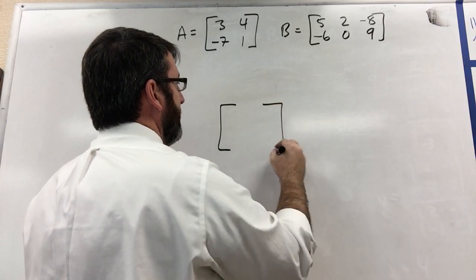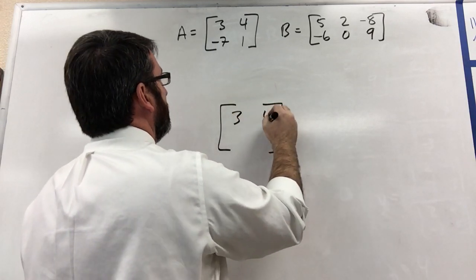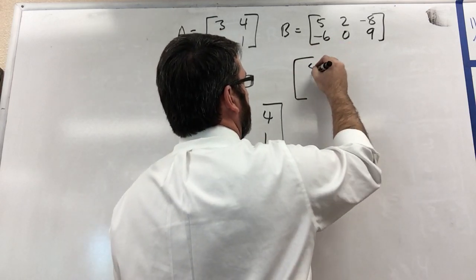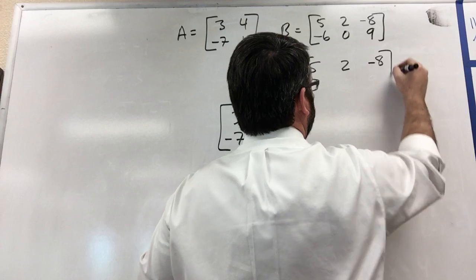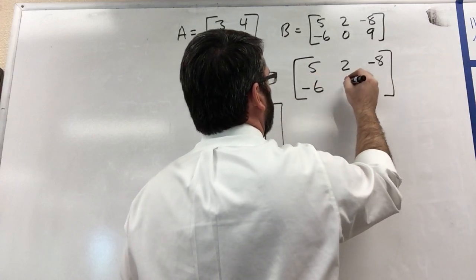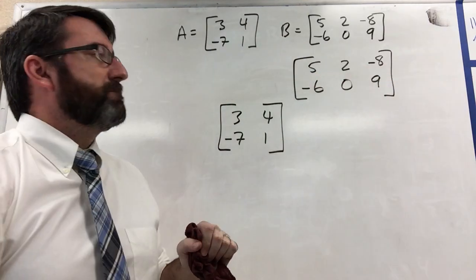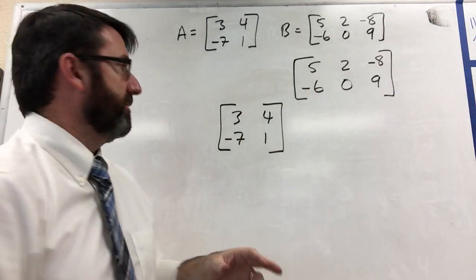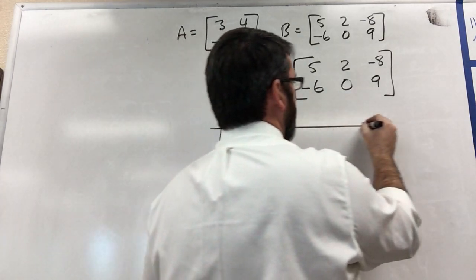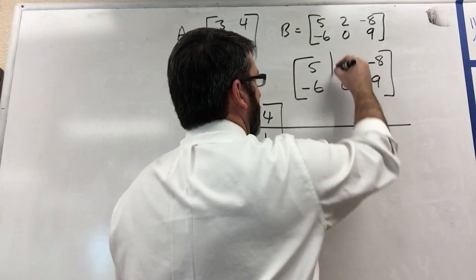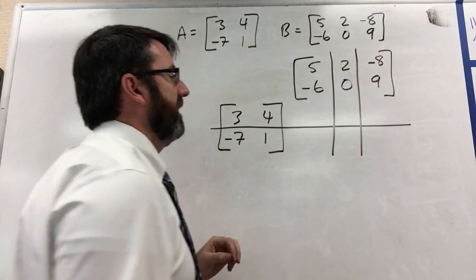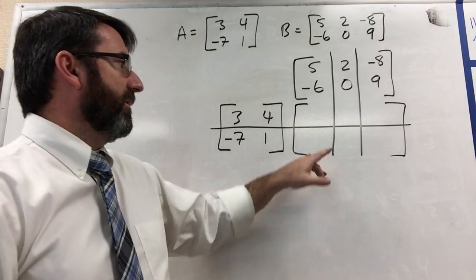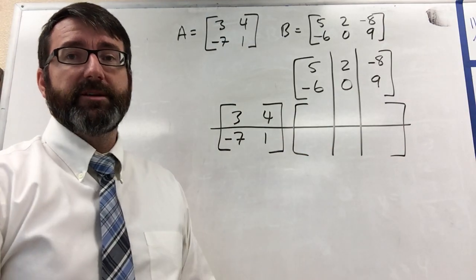So we're going to put A down here, and let's put B up here: 5, 2, negative 8. And now in order to keep track of which rows we're multiplying by which columns, I'm going to draw a line through the rows of matrix A and through the columns of matrix B. And this is going to give us our 2 by 3 matrix that's going to be the answer.